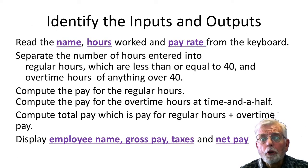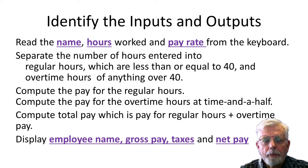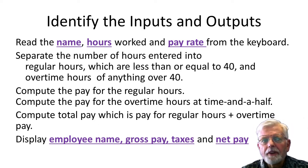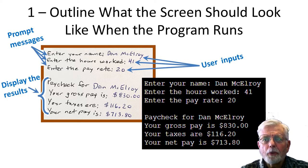The first thing you should do when you get a programming project is to identify the inputs, the outputs, and then the processing needed to go from the inputs to the outputs. The inputs to the program are from the keyboard: employee name, hours, and pay rate. The outputs are to be displayed on the monitor: gross pay, taxes, and net pay. Once we know the inputs and outputs, we need to figure out the computations needed to get from the inputs to the outputs. We should also get an idea of what we want the screen to look like when the program runs — draw it out on paper. As the project progresses, don't worry if the actual program output does not look exactly like your original plan. Plans can change.